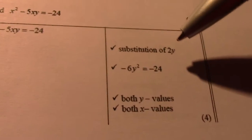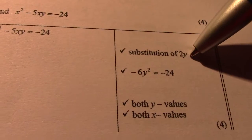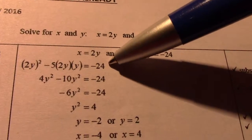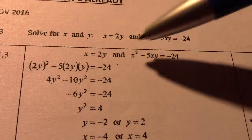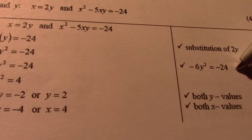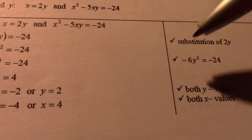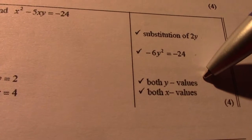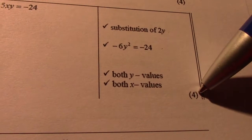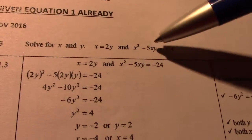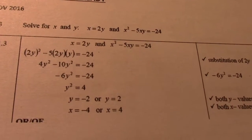So mark allocation, as I say, very important. Always one mark for substitution. So they are substituting equation 1 into equation 2. 1 mark for simplifying or getting in standard form. In this case, it was just minus 6y squared. Then getting both y values, getting both x values, only 4 marks. So this one is only 4 marks, because straightforward equation was given to you.